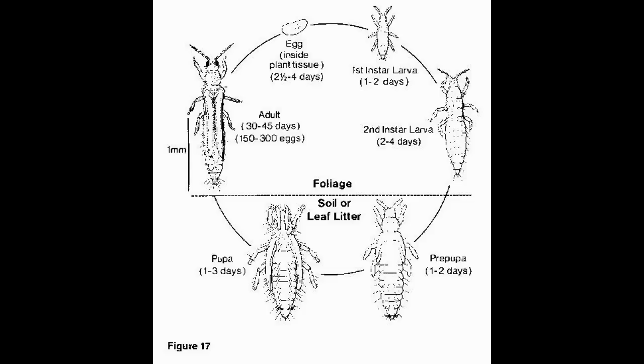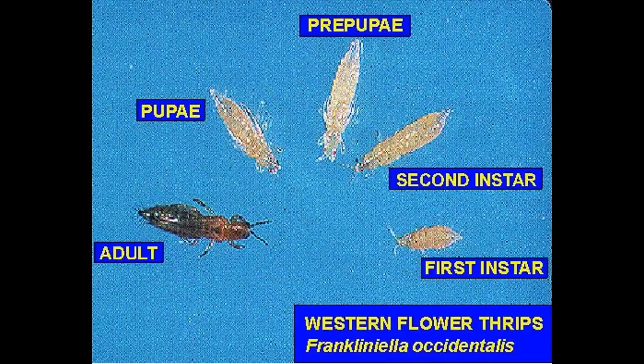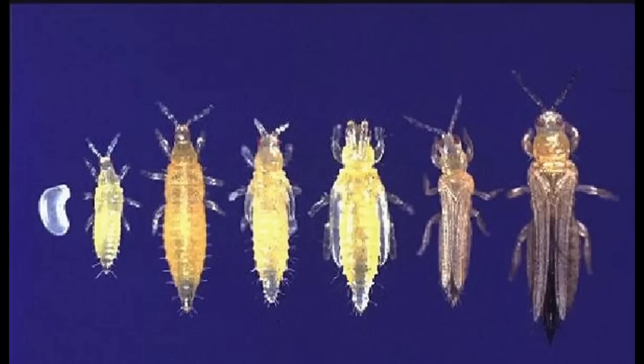Thrips have a metamorphosis that is intermediate between complete and gradual. Last instar larvae change greatly in appearance and are often called pupae, even though thrips do not have a true pupal stage. Thrips will usually lay their eggs inside leaf tissue until hatching into larvae, then spending the rest of their time in the soil until emerging into adults.